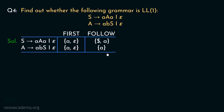Observe the first and follow sets carefully. For non-terminal S, the terminal small a appears in both the first and follow sets. In the LL1 parsing table, this means production S→aAa would be placed under column a, but since S can also generate epsilon, S→epsilon would also be placed under column a — giving two entries. The same conflict exists for non-terminal A as well. Clearly, this grammar is NOT an LL1 grammar.